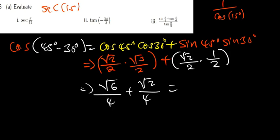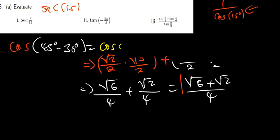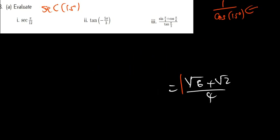Since the denominators are the same, I add the numerators. So I get (√6 + √2)/4. This is the exact value of cos(15°). But the question was sec, and I said sec = 1/cos(15°), so the answer is 1 over (√6 + √2)/4.